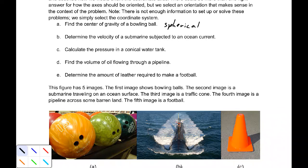Part B. Determine the velocity of a submarine subjected to an ocean current. There's not exactly any rotation with a submarine. They turn left, right, north, south, east, west. They decrease in depth, increase in depth. So there aren't really any symmetries. So it might actually just make sense to use a Cartesian coordinate.